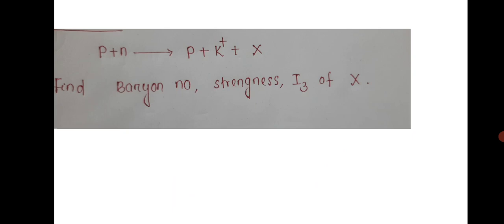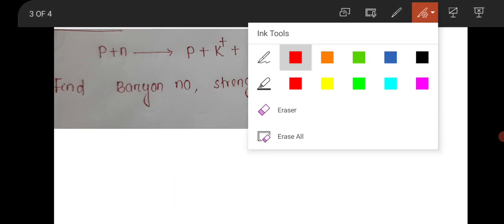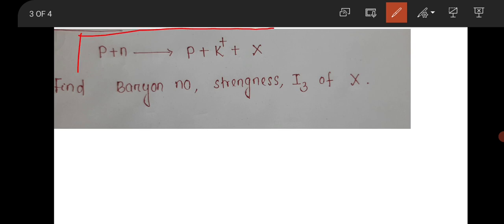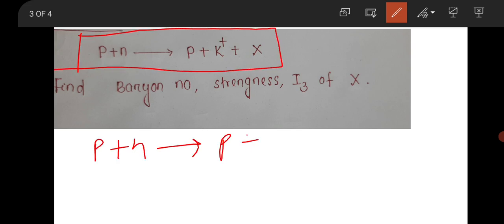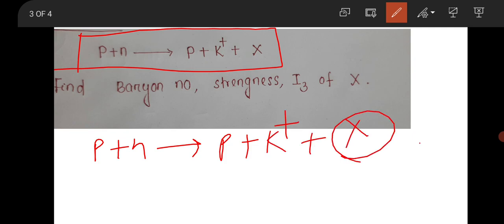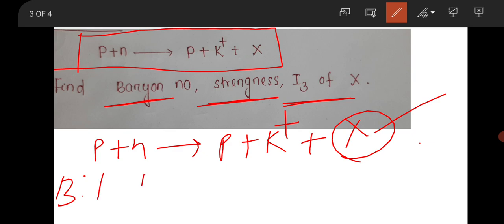The other question is from nuclear and particle physics. The nuclear reaction given is p + n → p + K⁺ + X, where X is an unknown particle. You have to find the baryon number, strangeness number, and I₃ component of X. Checking baryon number conservation: proton has baryon number 1, neutron is 1, total is 2 on the left. On the right, proton is 1 and K⁺ is 0, so baryon number of X must be 1.